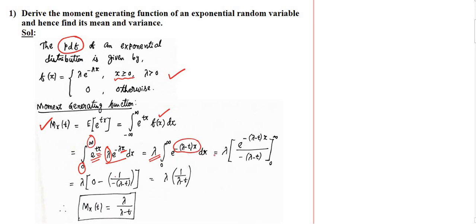The integration of e^(−(λ − t)x) is e^(−(λ − t)x) divided by −(λ − t), with limits 0 to infinity. When you apply the upper limit as infinity, e^(−∞) equals 0, so the first term is 0. Applying the lower limit, e^0 = 1 divided by −(λ − t). When you simplify, you get λ divided by (λ − t). This is the moment generating function.